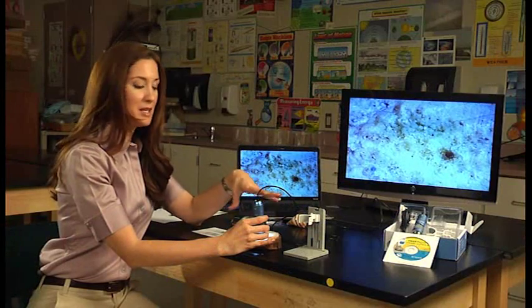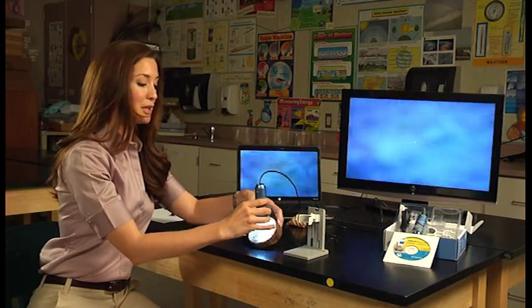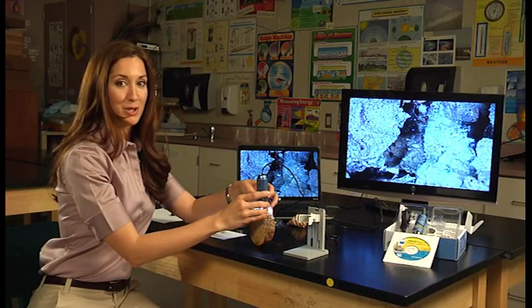But what's great about the SmartScope 5M is you're not limited to just this side like you are with the slide. You can actually pick up the object and turn it around and look inside there. You can actually see inside the crevices of the bark. You'd never be able to do this with a traditional microscope.